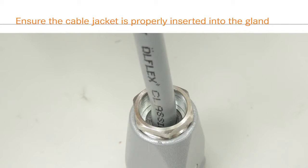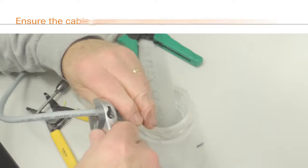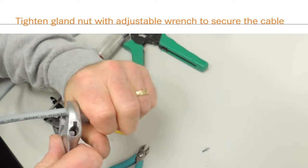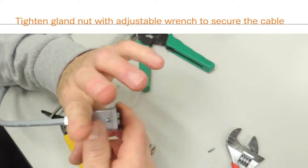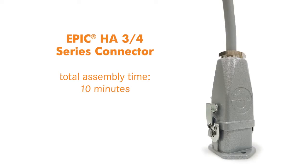Ensure that the cable jacket is properly inserted into the hood gland to form a seal. Tighten the gland nut with an adjustable wrench. Your EPIC HA3 rectangular connector is now wired and assembled.